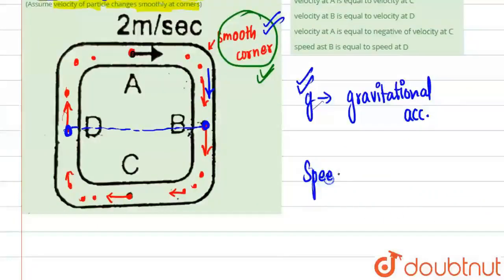Speed at B will be equal to speed at D. Why? Because how much it will increase over here, that much it will decrease on this path, because they are at same level.